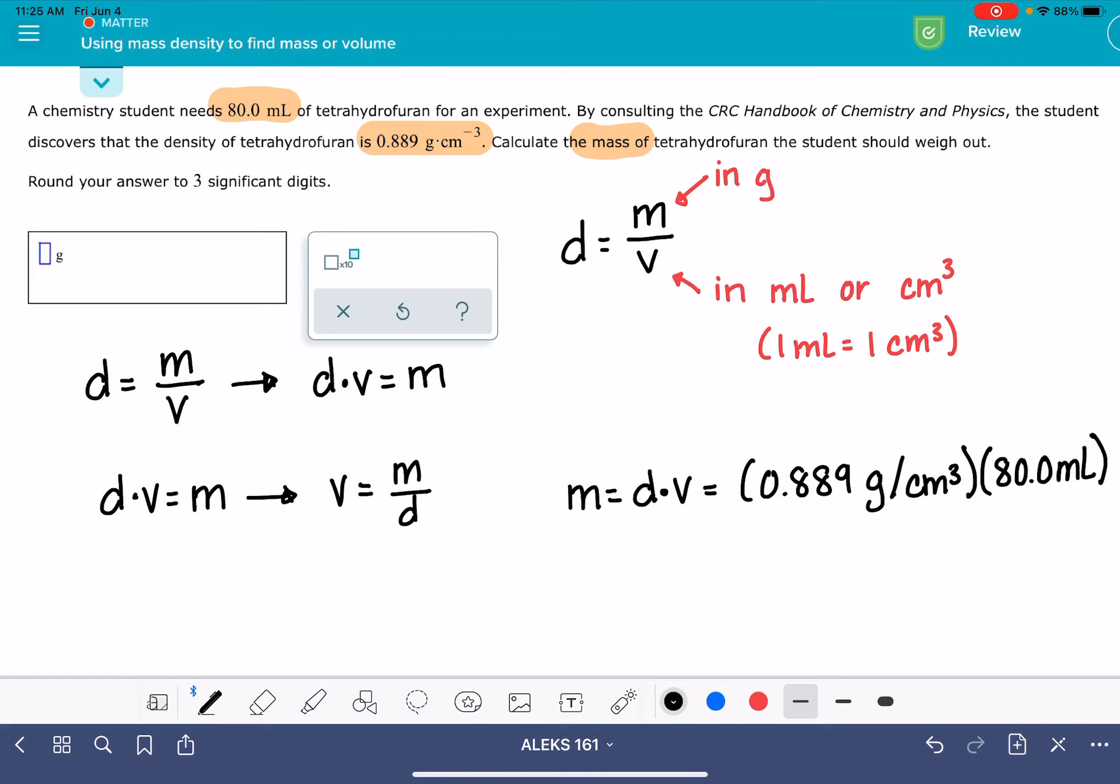It is a little bit confusing the way the units are going back and forth here. Remember that one milliliter is the same thing as a cubic centimeter, so I'm going to use the unit milliliter instead. That way we can really easily see how the units cancel out.